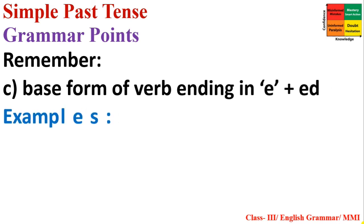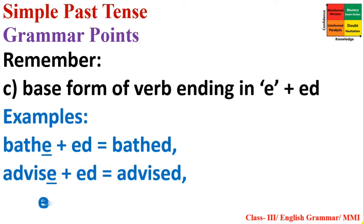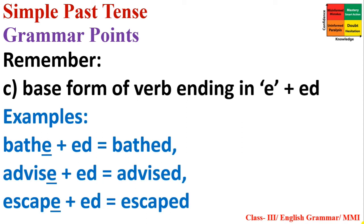Rule C: base form ending in E plus -ED. When a verb ends in E, we do not write double E — only a single E is kept. For example: baste + ed = basted; advise + ed = advised; escape + ed = escaped.